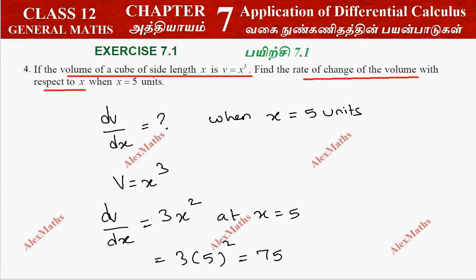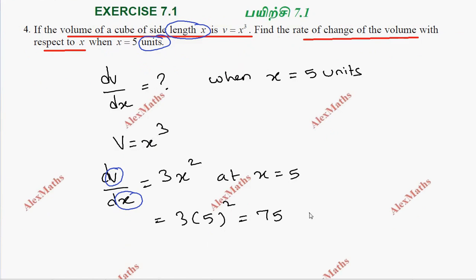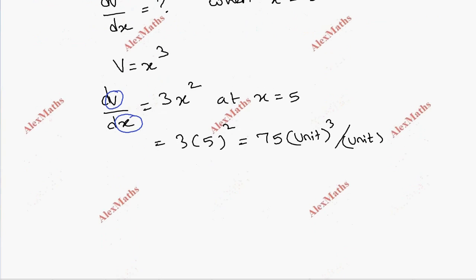If you have a unit, this is volume. X is the length in units like meter or feet. Volume is measured in cubic units, so this is unit cubed per unit. The final answer is dV by dx, that is 75 units cubed per unit.